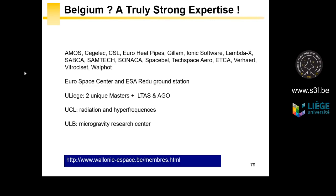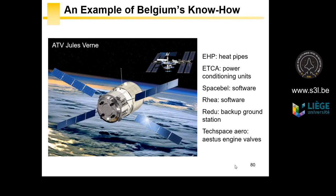Here you can find the URL of the Wallonia Space website. Belgium has a lot of equipment in space. One famous project in which Belgium was involved is the ATV Jules Verne — the European cargo ship resupplying the ISS. Many parts were designed by Belgian companies: EuroHeatpipes for heat pipes, ETCA for the electrical power system, Spacebel for software, and Saffran Aerobooster for the valves of the Aestus engine. The ground station in Redu was the backup ground station.